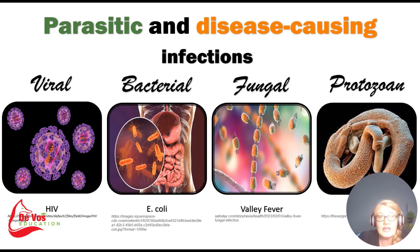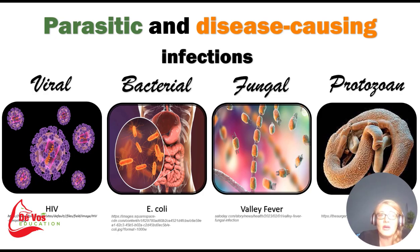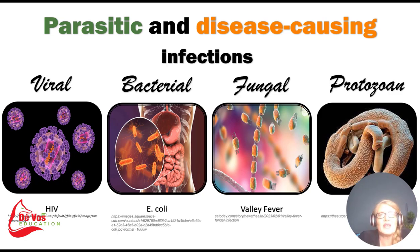Valley fever is unique — it's caused by a fungus, a type of Coccidioides, and is a respiratory infection typically contracted by inhaling fungal spores in arid or dry regions. And then we have Bilharzia, a parasitic infection caused by Schistosoma parasites, transmitted through contact with contaminated water, leading to various symptoms affecting the liver, intestines, and other organs. This one is also one of those latent infections.